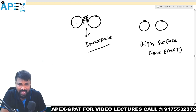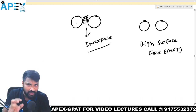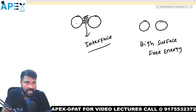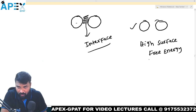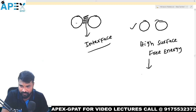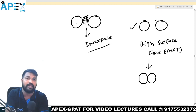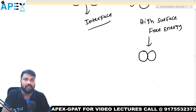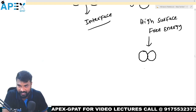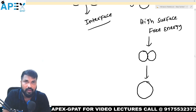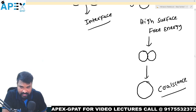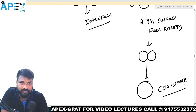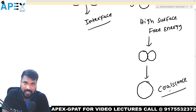When they have high surface free energy and are more energetic, they start to move. Both oil globules fuse together, and when they fuse, they become bigger globules. This process we call coalescence. Due to this coalescence, the system becomes unstable.